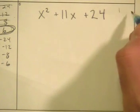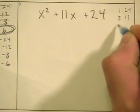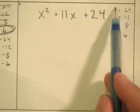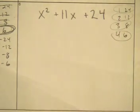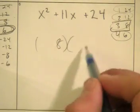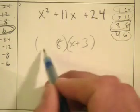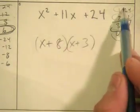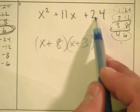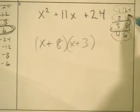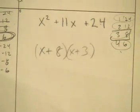Let's look at another one. I list the factors again: 1 and 24, 2 and 12, 3 and 8, 4 and 6. Do any of these add up to 11? Yes — 8 and 3. Those are my numbers: 8 and 3. First, I list the factor pairs of 24, and then because the constant is positive, I look for the sum equal to the middle coefficient. I found it.